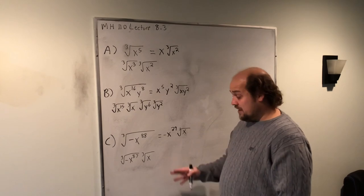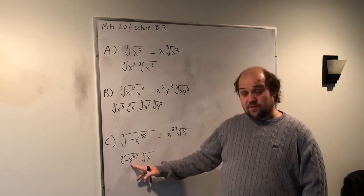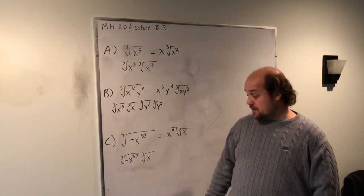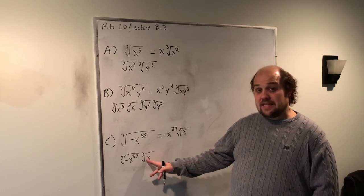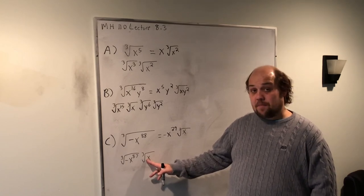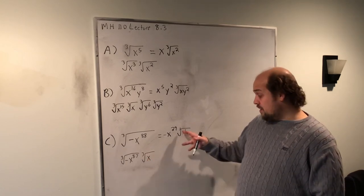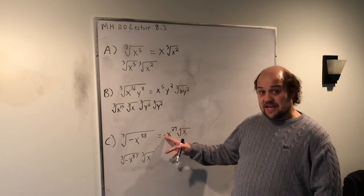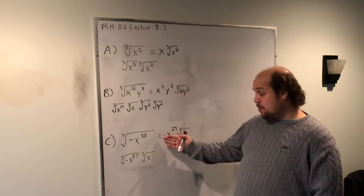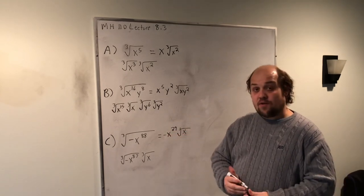Note that even though the negative was placed with the first term and brought out of the problem, it would also be fine to leave the negative under the cube root. Either way, both multiply together to give a negative overall result.